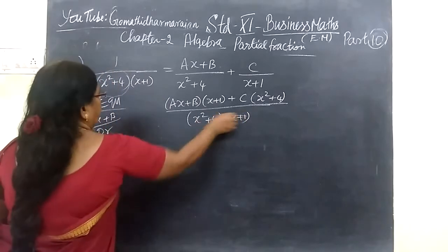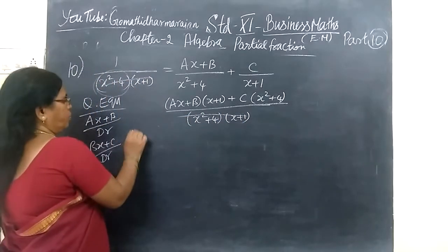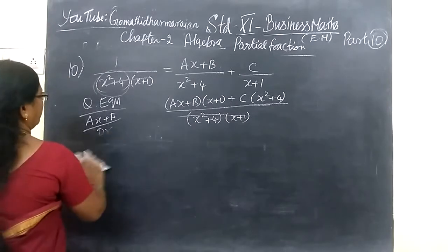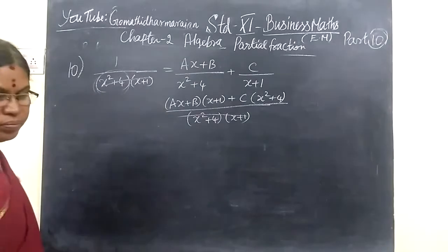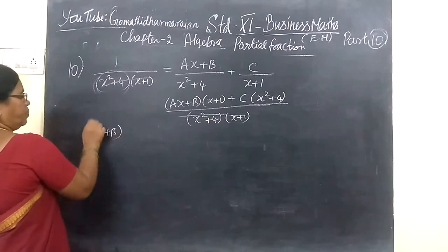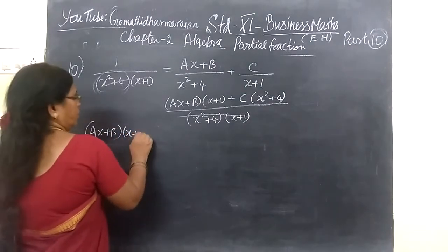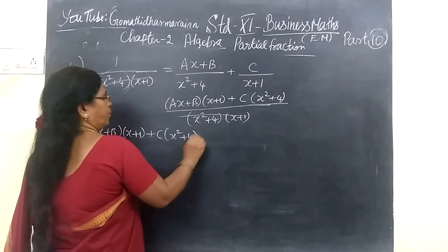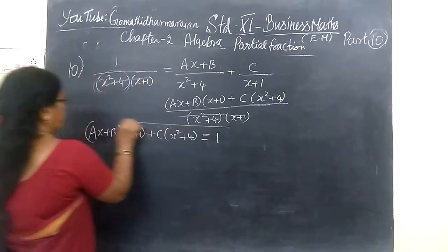Then C divided by x² plus 4. So you write AS plus B times (x plus 1) plus C times (x² plus 4). This is equal to 1.